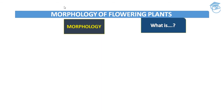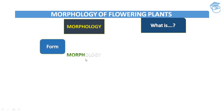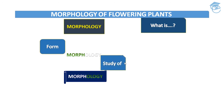Now the question arises: what is morphology? Morphology is made up of two words — first is morph and second is logi. Morph means form and logi means study of. So the study of form or feature is called morphology. Please note that morphology is of two types.